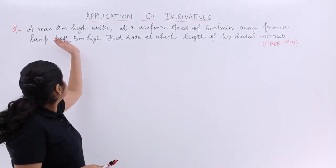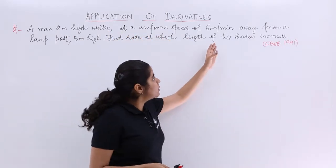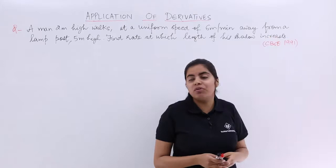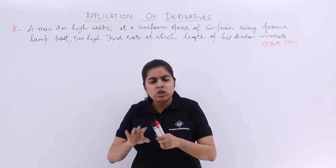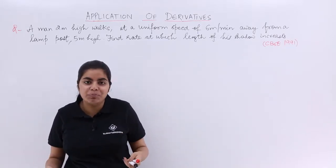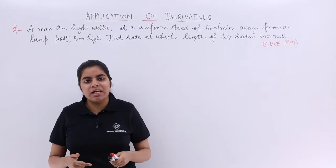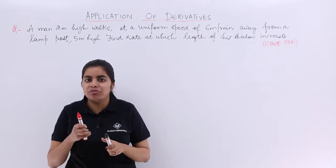Let's see the question. A man 2 meter high walks at a uniform speed of 6 meter per minute away from a lamp post 5 meter high. A lot of information given just like the heights and distances questions that we have been studying in our junior classes.